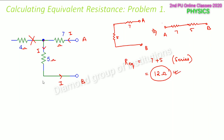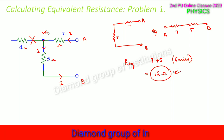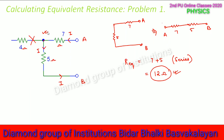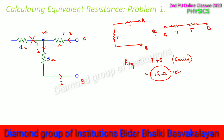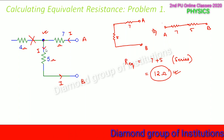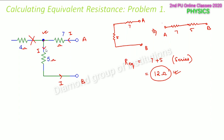Note this important point: current always follows the easiest and shortest path. Had the 4 ohm resistor been connected to a terminal, it would have played a role — the current I would have divided into two parts I1 and I2. That is how we solve this problem. Now let us look at the next problem.